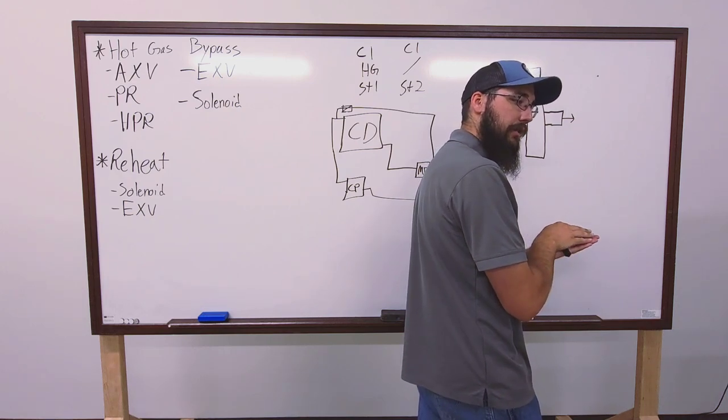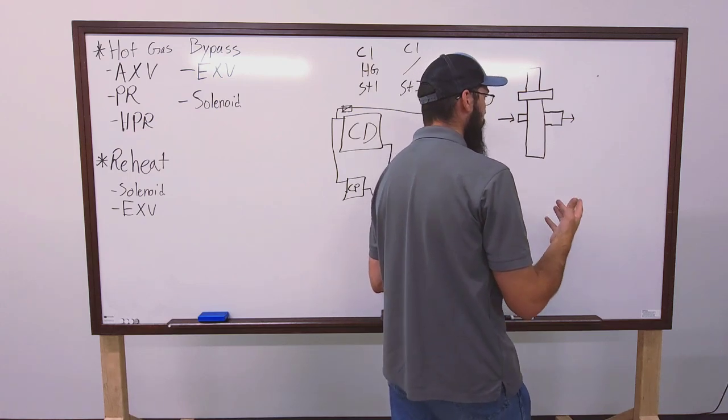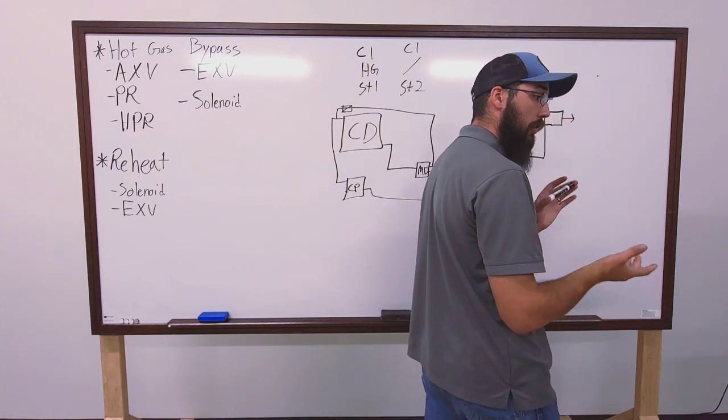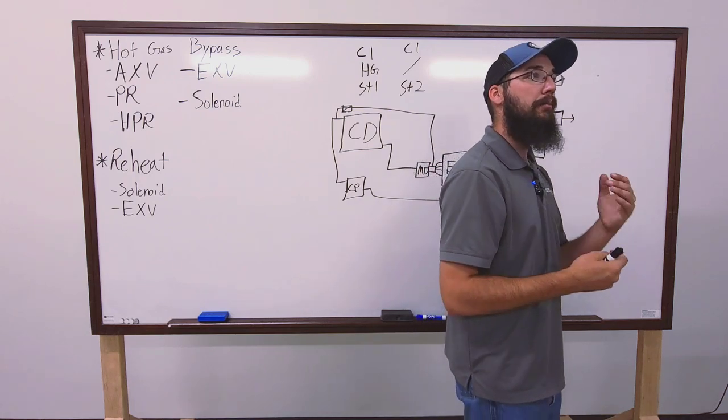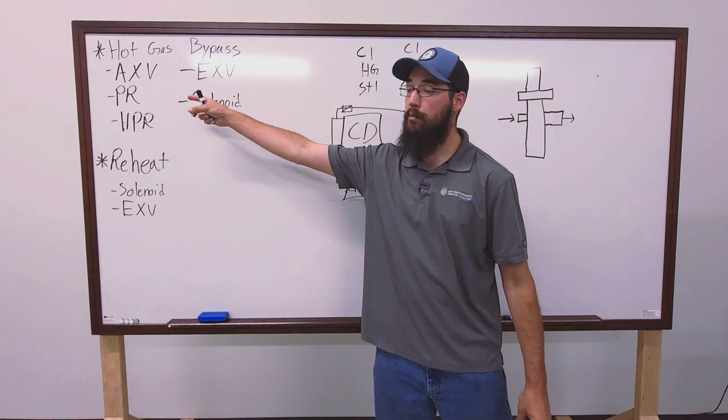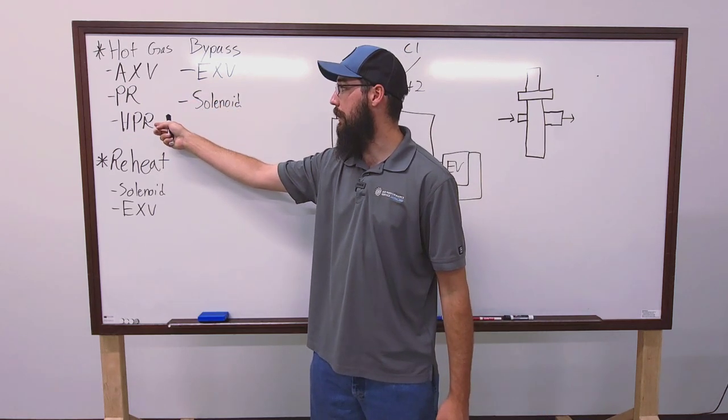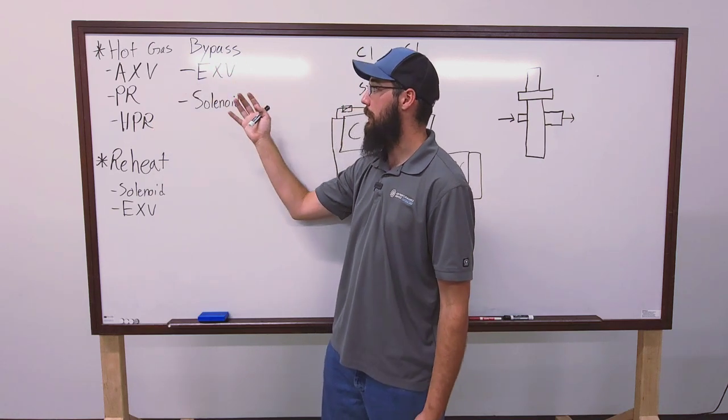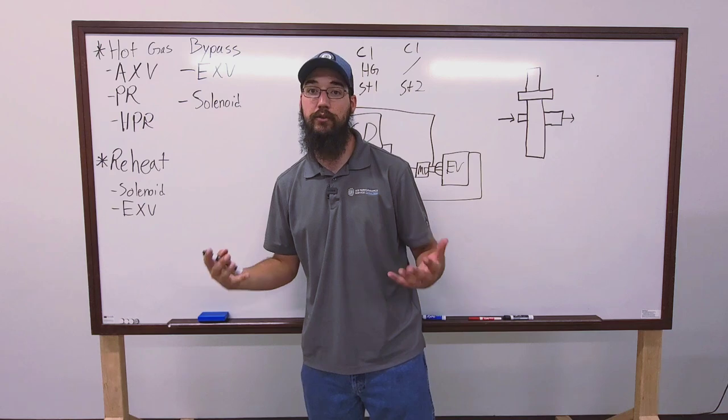To allow pressure to flow. Right, it's controlling a differential. Ultimately, that's what AXVs do. They are a pressure differential control device. Which, so is a pressure regulator. And, technically, so is a... Honestly, if we really got down to it, short of a solenoid, it's what all these do. They control pressure differential across them. Now, in reality, these three are specifically designed to operate off of pressure differential.